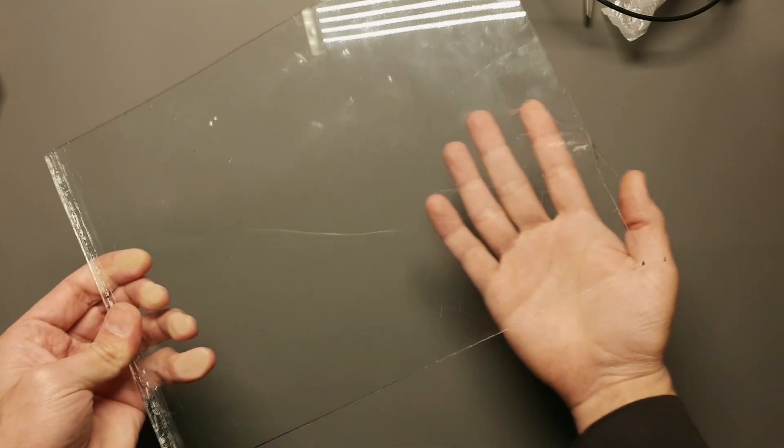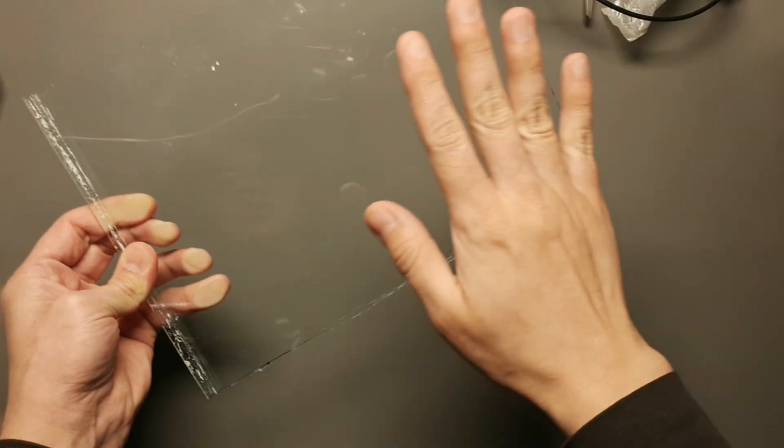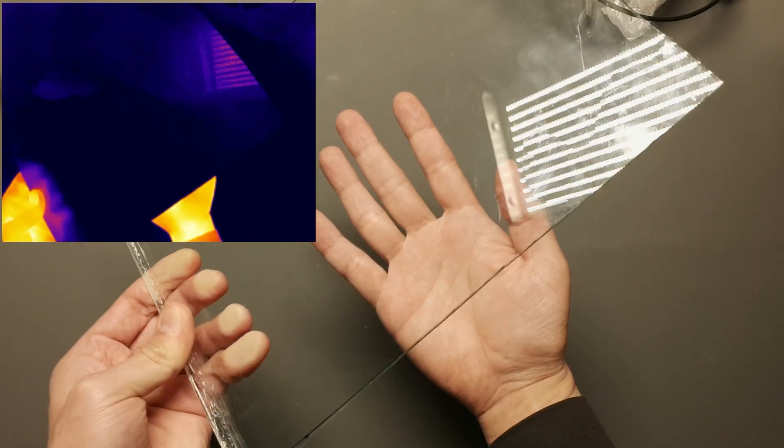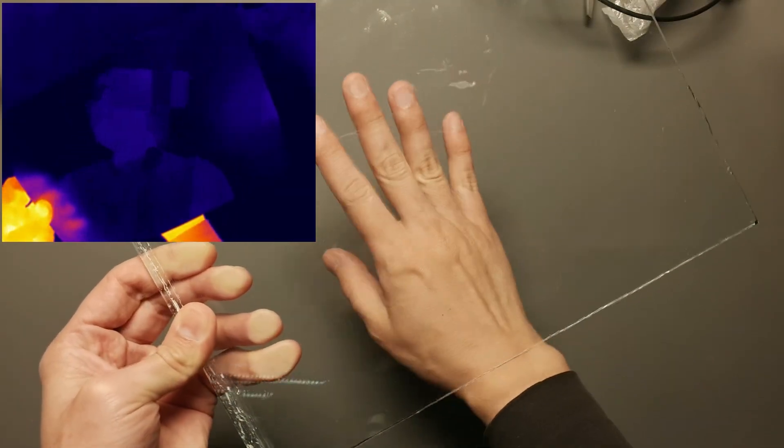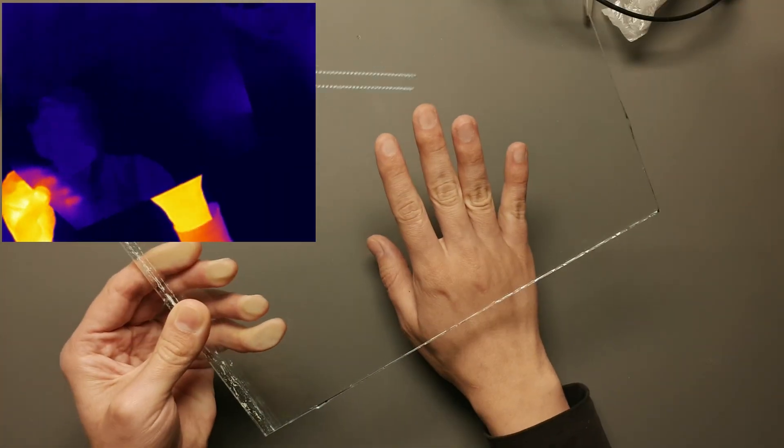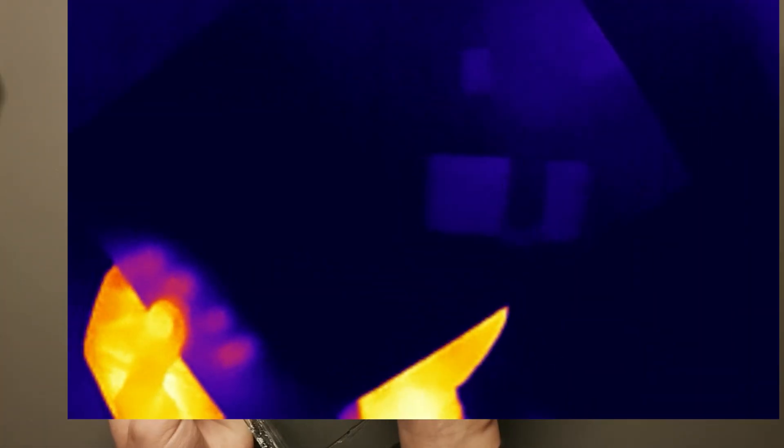Now let me show you how the world looks at those frequencies called infrared light. Let's start with something we usually associate with transparency: glass. In the visible spectrum, glass is perfectly transparent. We can easily see through it. But in infrared, it's a completely different story. It appears completely opaque.